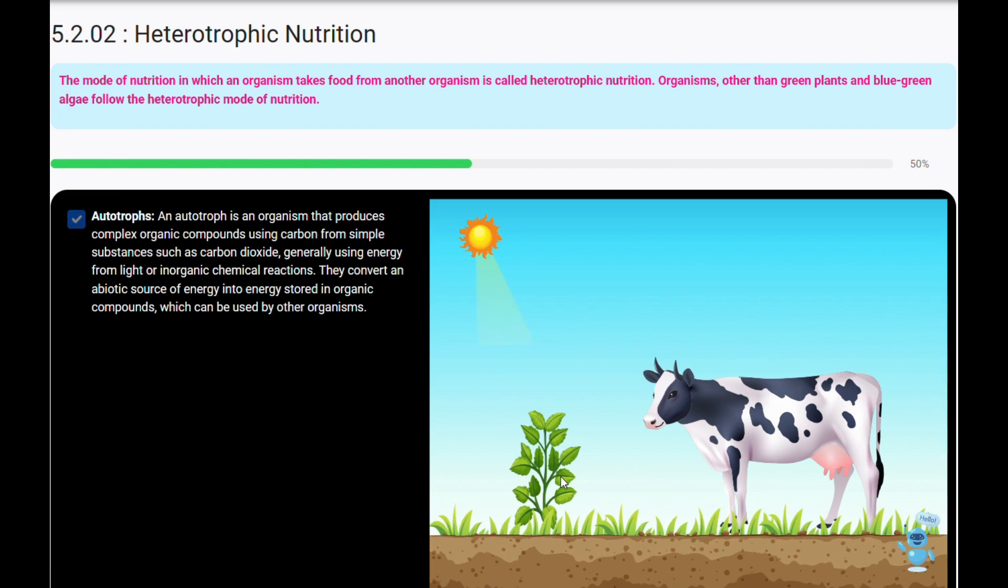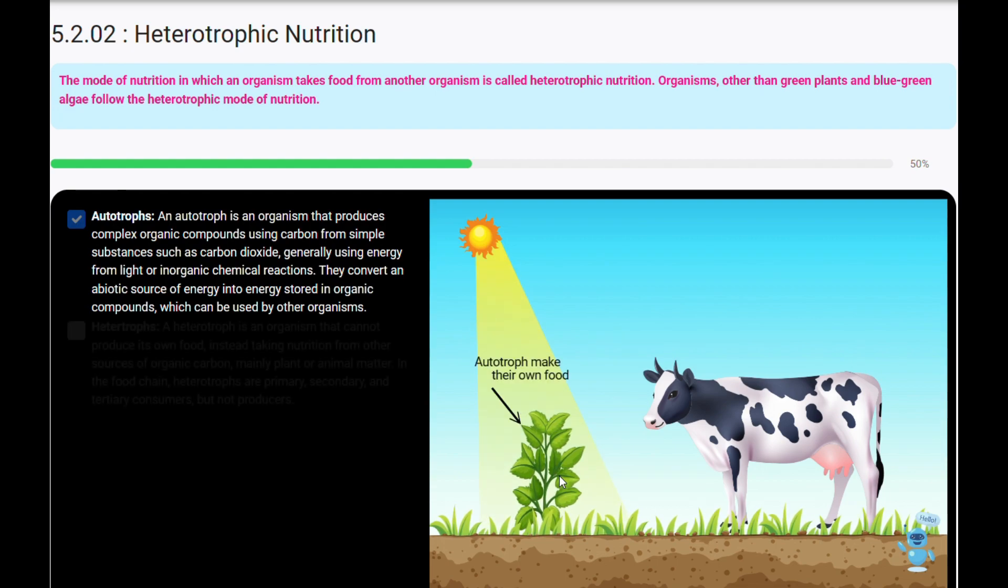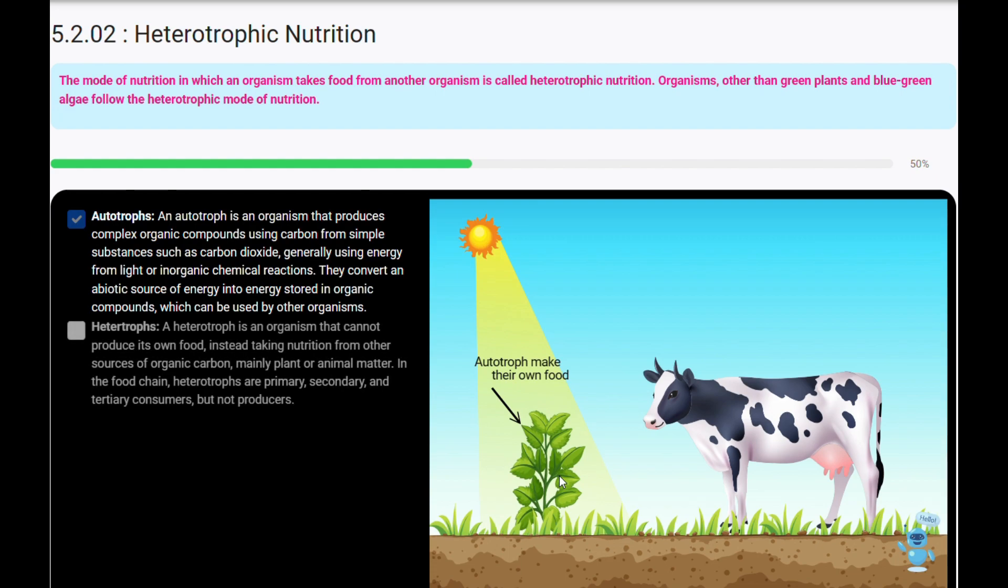Autotrophs: An autotroph is an organism that produces complex organic compounds using carbon from simple substances such as carbon dioxide, generally using energy from light or inorganic chemical reactions. They convert an abiotic source of energy into energy stored in organic compounds which can be used by other organisms.